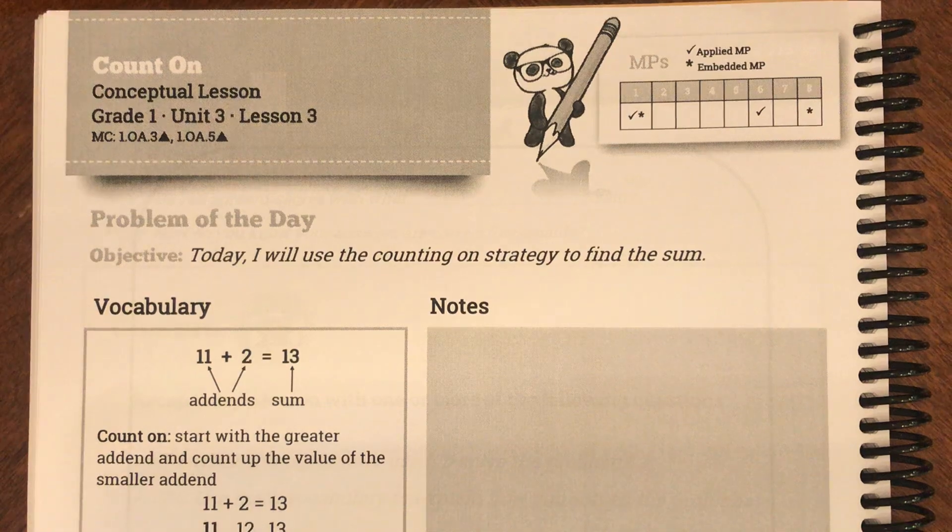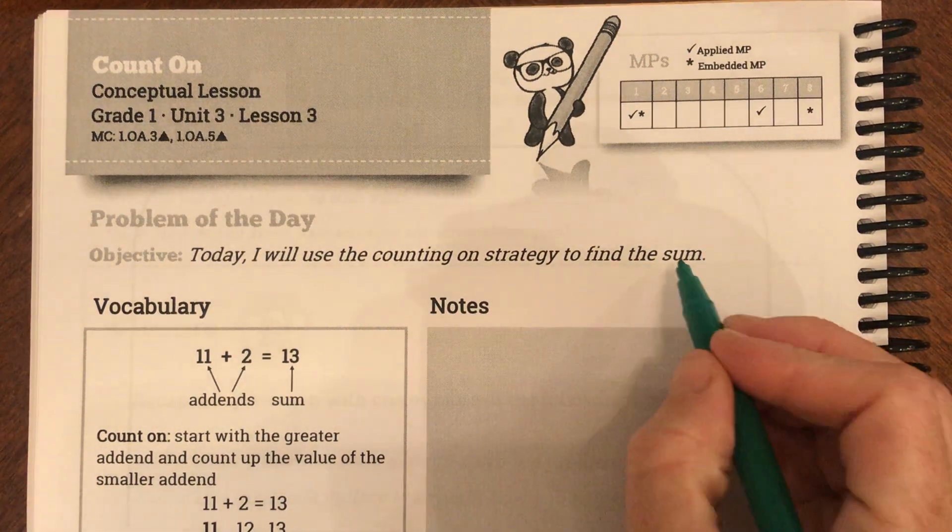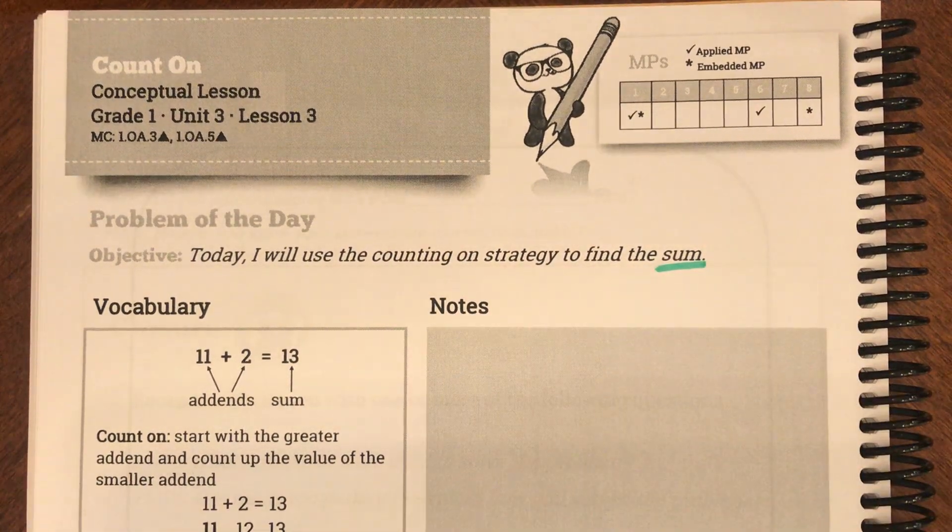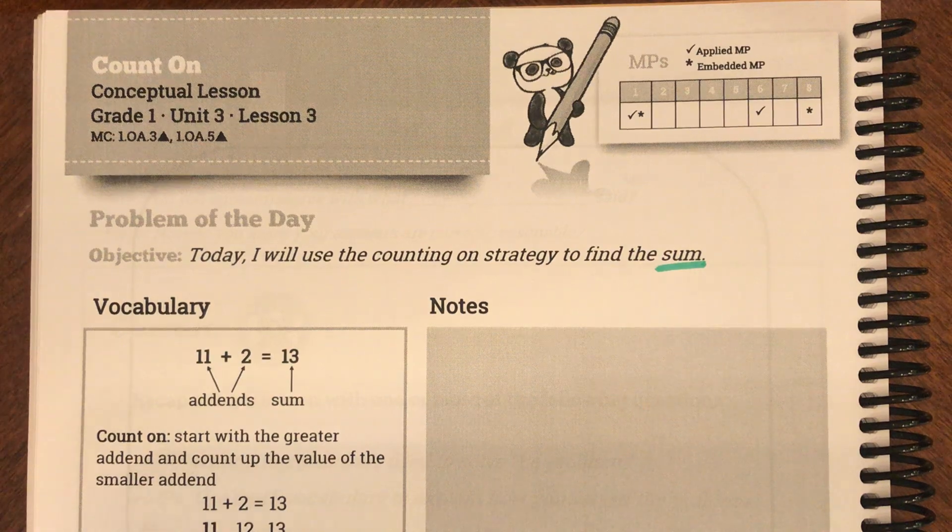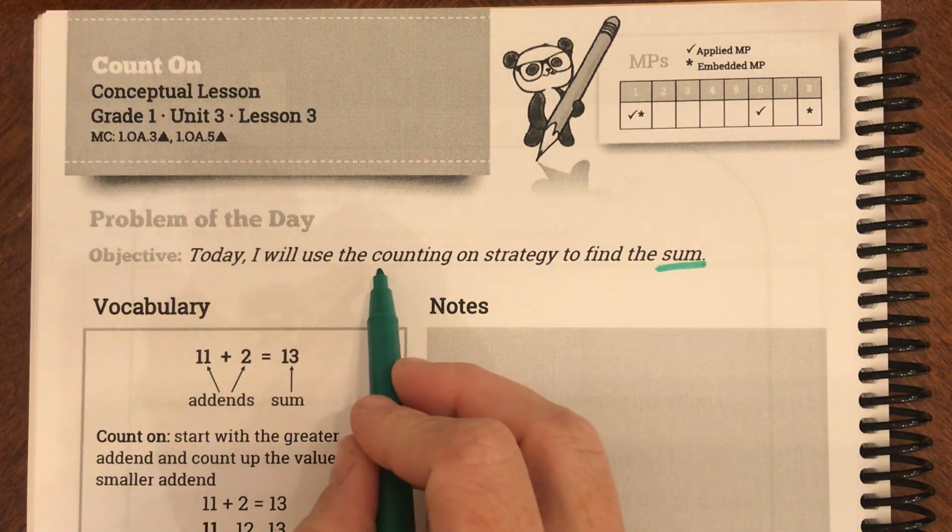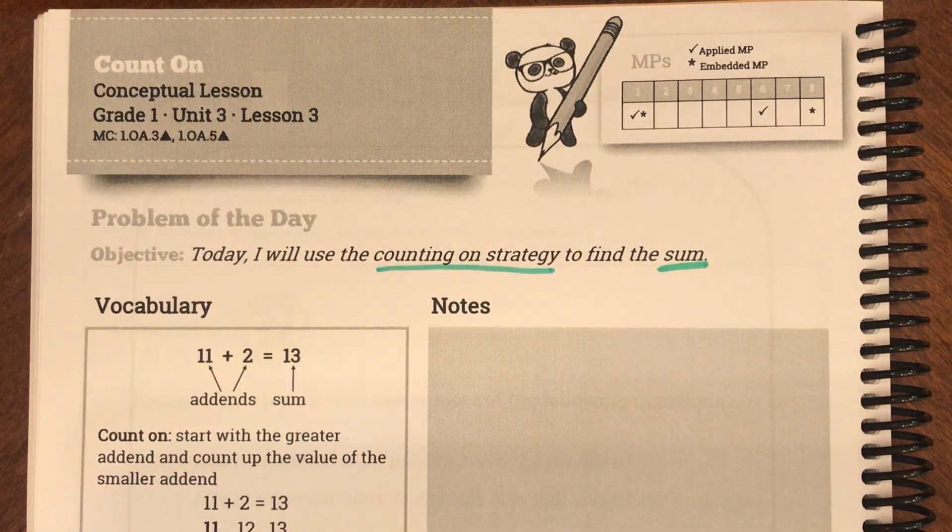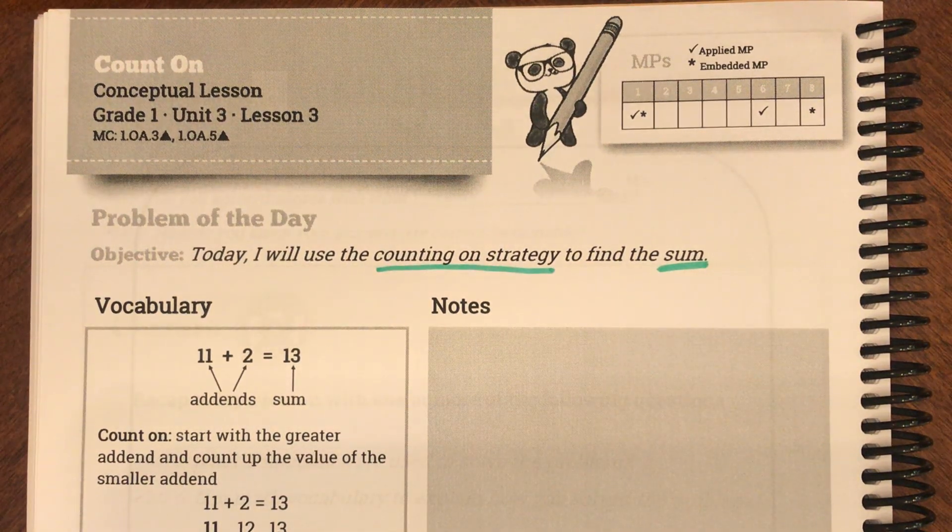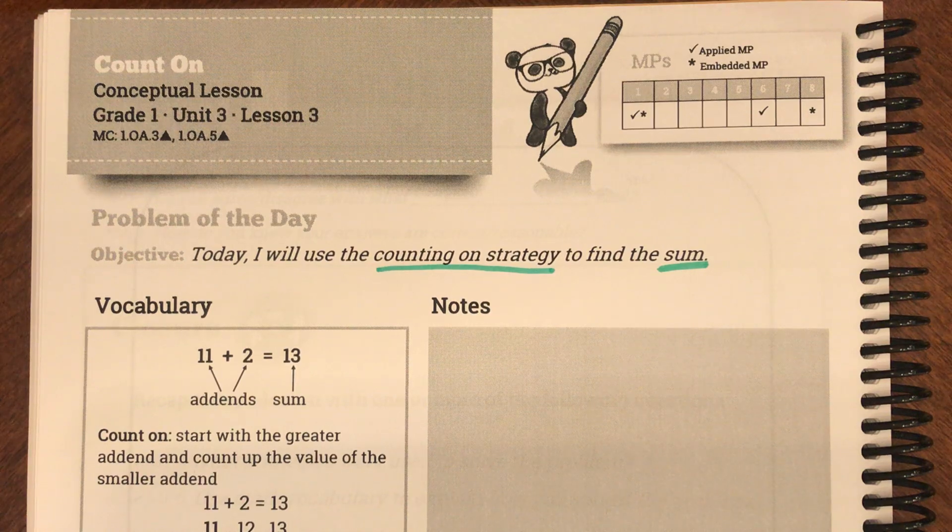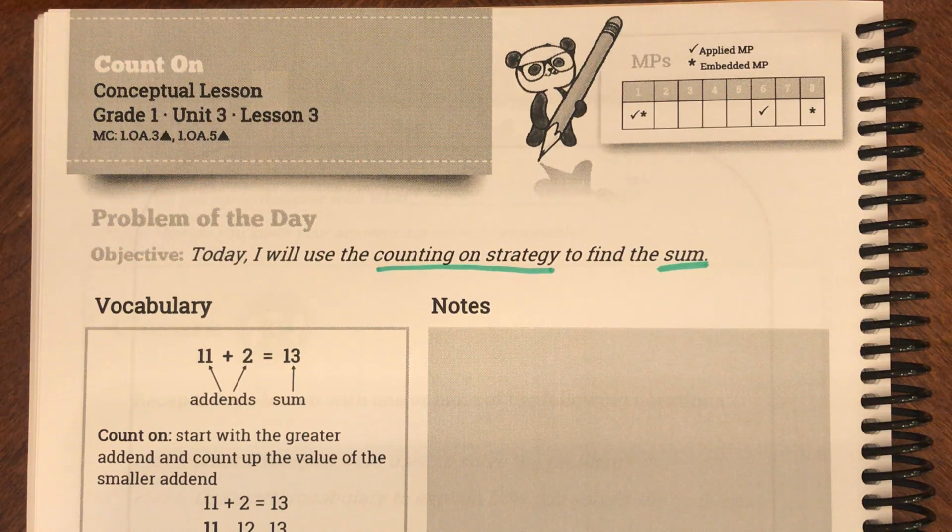So we're still going to be using addition because remember sum is our answer to an addition problem. But our strategy or our tool today is going to be something called counting on strategy. So our tool that we used in the last two lessons was the number line. Now we're going to have a new strategy.